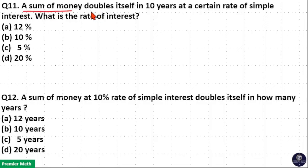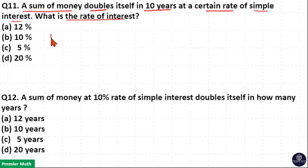A sum of money doubles itself in 10 years at a certain rate of simple interest. What is the rate of interest? If I invest 100 rupees in the bank, after 10 years I will get double the amount, that is 200 rupees.